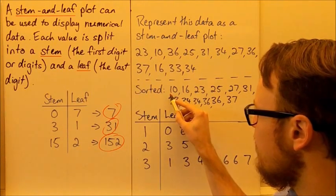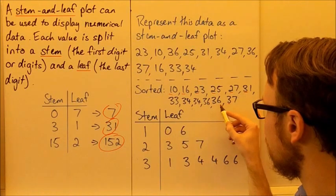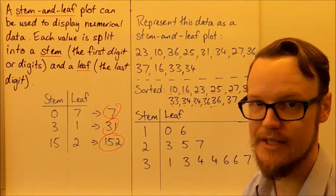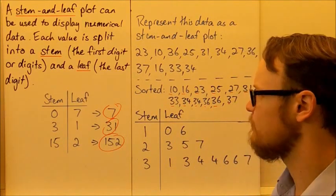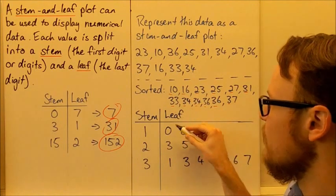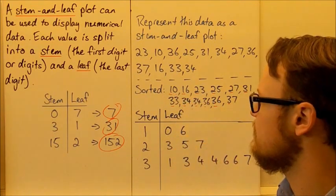So we can see that our first values here are ones, then we have twos, then we have threes. So there are our first values and we can put them as our stem for our stem and leaf plot. Then for each data point, we put down the leaf which is the last digit of each one. So here our last digit is 0, last digit is 6, so that's 10 and 16 we've plotted on our stem and leaf plot.